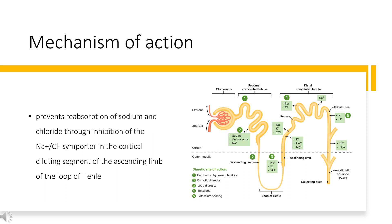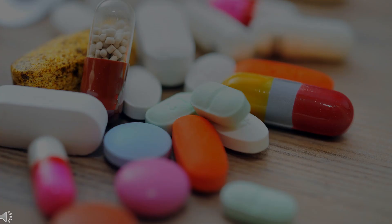Chlorthalidone has also been shown to decrease platelet aggregation and vascular permeability, as well as promote angiogenesis in vitro, which is thought to be partly the result of reductions in carbonic anhydrase-dependent pathways. These pathways may play a role in Chlorthalidone's cardiovascular risk reduction effects.